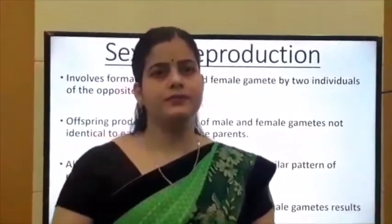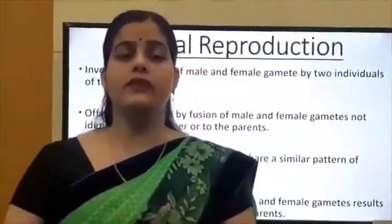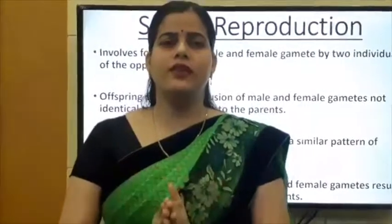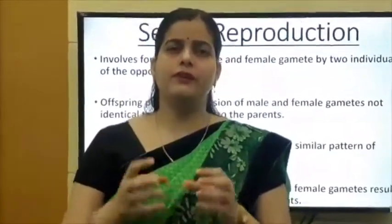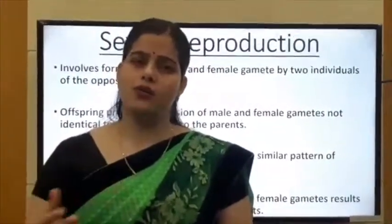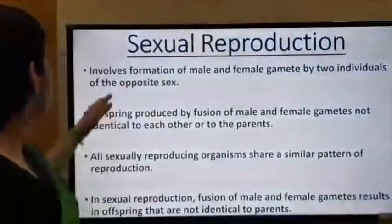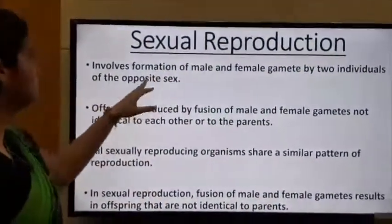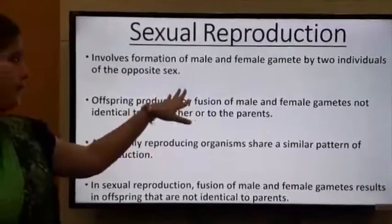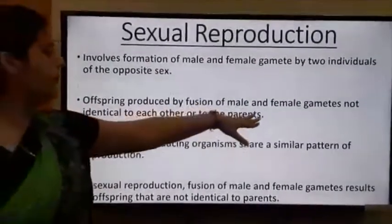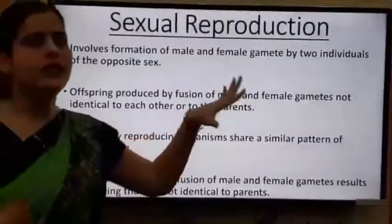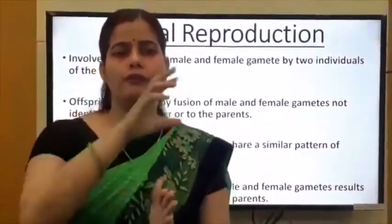Sexual reproduction is a process in which two parents of opposite sex are involved. The male and female gametes fuse together to form a zygote, and the zygote divides and differentiates into an offspring. Offspring produced by fusion of male and female gametes are not identical to each other or to the parents.